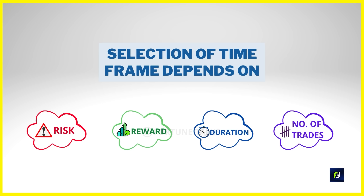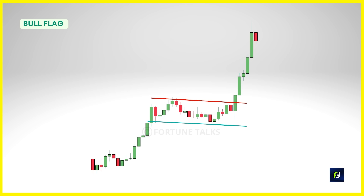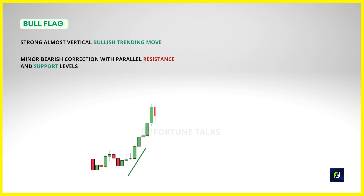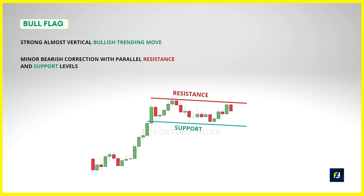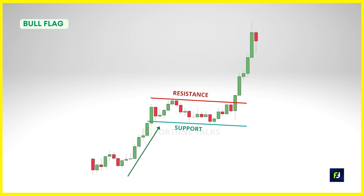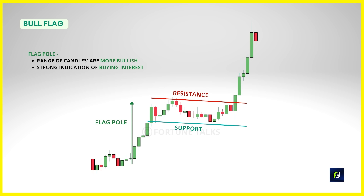The bullish flag, or bull flag, forms during a bullish trend. It starts with a strong, almost vertical bullish trending move — the flagpole — which then stabilizes and turns into a minor bearish correction with parallel tops and bottoms acting as support and resistance. There are three components to any flag pattern. First, look for a preceding up move or uptrend forming the flagpole — candles are more bullish than usual and tend to close near the highs, indicating strong buying interest with bulls dominating the market.